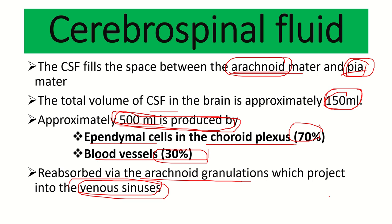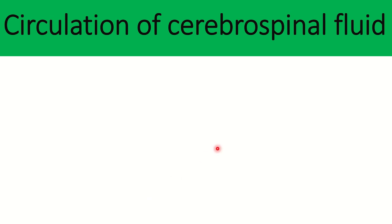To recap: CSF is located in the subarachnoid space; normal volume is 150 ml; 500 ml is produced per day — 70% from ependymal cells of the choroid plexus and 30% from blood vessels. It is reabsorbed into the venous sinuses and re-enters systemic circulation via the arachnoid granulations.